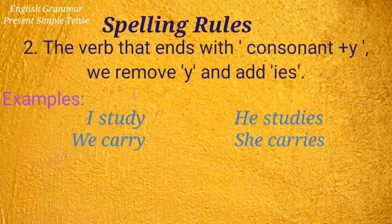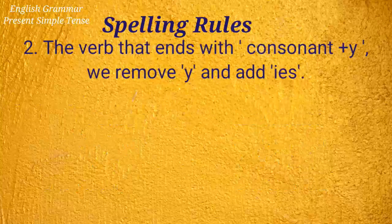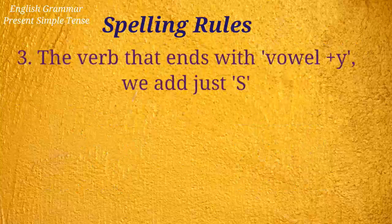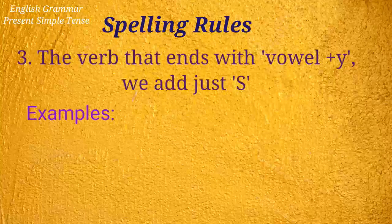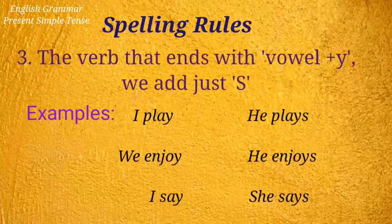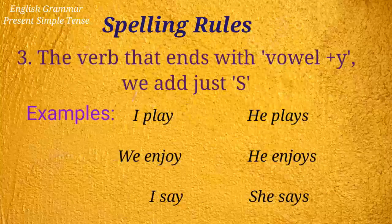More examples of consonant plus 'y' verbs: they worry, she worries. For verbs that end with a vowel plus 'y', we just add 's'. For example: I play, he plays; we enjoy, he enjoys; I say, she says.